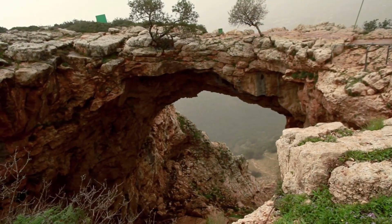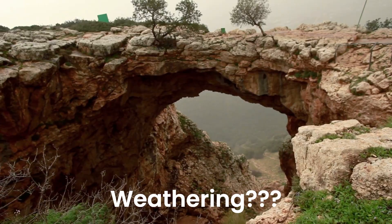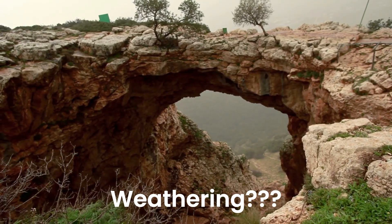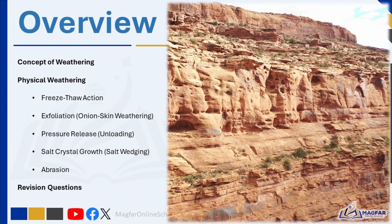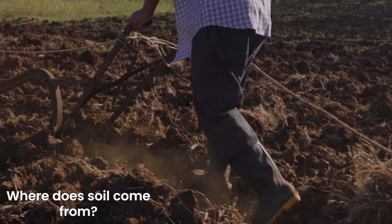Today we are starting a series into an incredible natural phenomenon called weathering. Rocks that split like onions and ice cracking open mountains — sound unbelievable? Well, stick around, because today we're exploring all these astonishing processes: the concept of weathering and physical weathering. But first, let's start with a fun question: where exactly does soil come from?